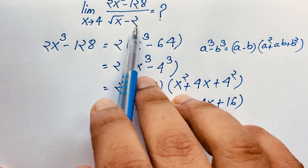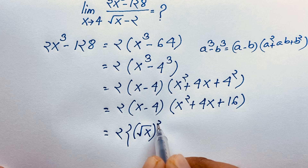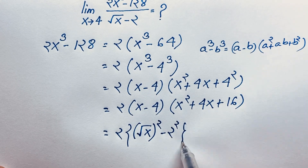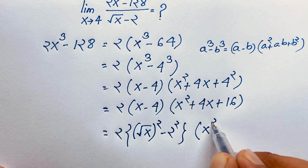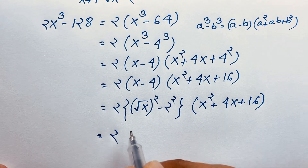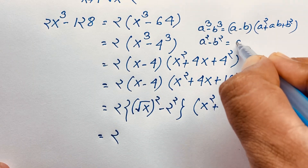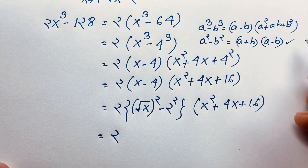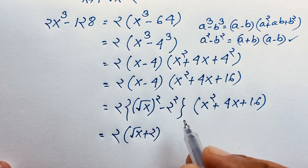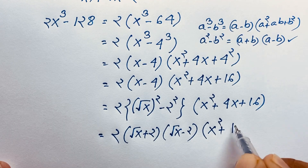Now for the denominator, √x - 2. I rewrite x as (√x)² and 2 as 2², so it becomes (√x)² - 2², which is a² - b². Applying the formula a² - b² = (a + b)(a - b), with a = √x and b = 2, this gives (√x + 2)(√x - 2). So the full numerator 2x³ - 128 equals 2(x - 4)(x² + 4x + 16).